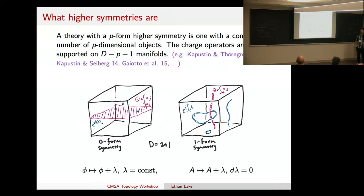So if we have a theory that comes equipped with some conserved p-dimensional objects, then we say it has a p-form higher symmetry. So for example, in this language, a regular symmetry that we're familiar with would be a zero-form higher symmetry because the operators that are usually charged under a regular symmetry are just local point-like operators, right?